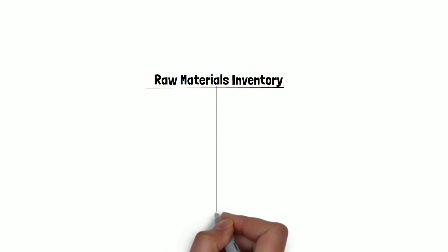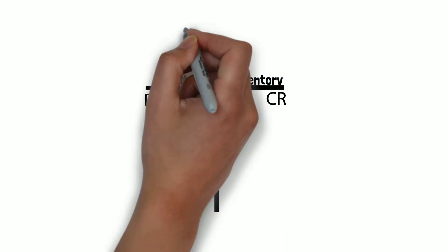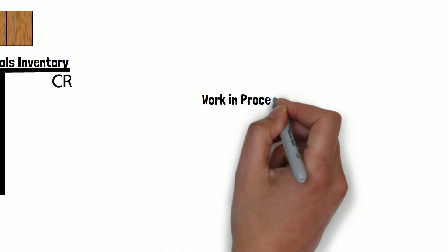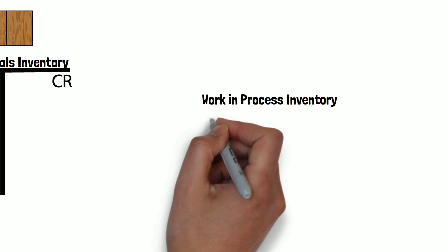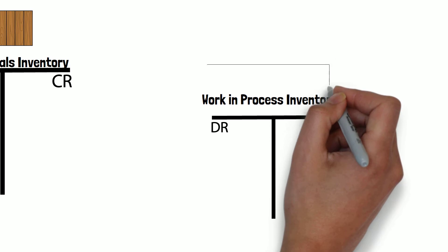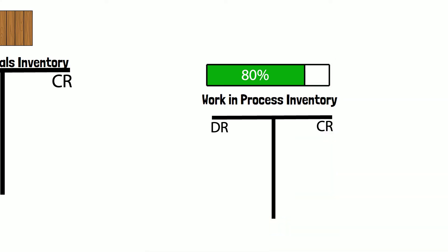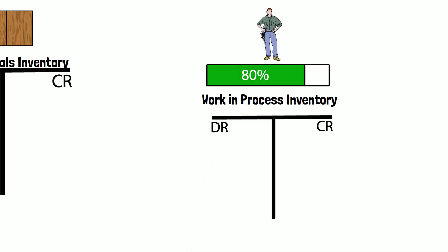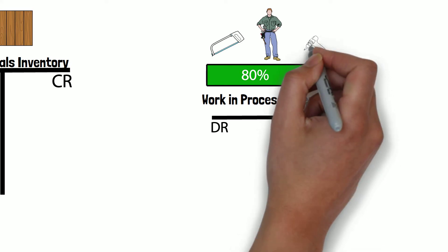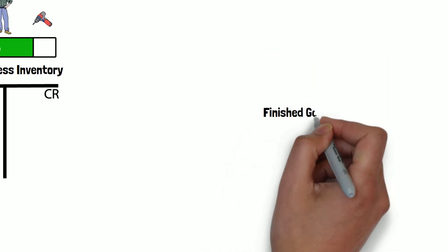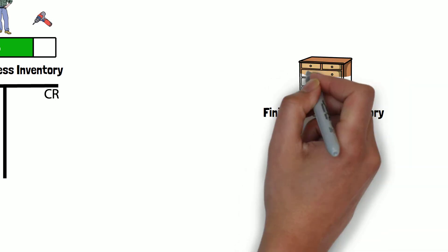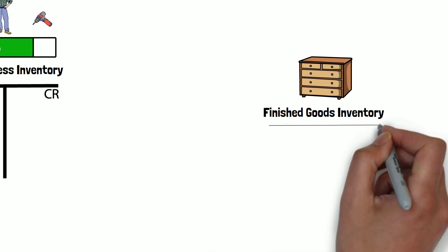We have three inventories. The first one would be the raw materials inventory — this would be the lumber. Then we have the work in process inventory, where we are converting the raw materials into finished goods; that's where the carpenter is going to use tools to work on the lumber. And then we have the finished goods inventory, which carries all the furniture that has been 100% completed.